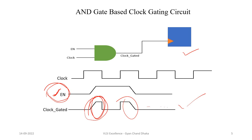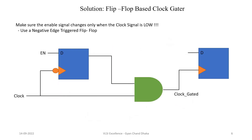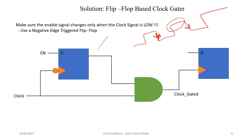Now let's see the solution. If we launch our enable signal from a negative edge clock flip-flop, it will ensure that our enable signal only changes during the time when the clock signal is low. This flip-flop is a negative edge sensitive flip-flop, so it will sample the enable signal at the falling clock edge only. That means whenever the clock signal is high, this flip-flop is not going to sample the enable signal, ensuring the enable signal never changes during that time. It will only change at the falling edge — it will never change when the clock signal is high.